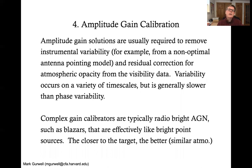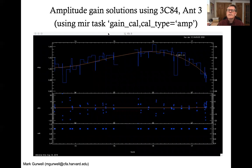Amplitude gain calibration is usually required to remove instrumental variability from, say, a non-optimal antenna pointing model and residual correction for atmospheric opacity from the visibility data. Variability occurs also on a variety of timescales. However, it is generally slower than phase variability, but not always. Sometimes they are related. If the atmosphere is very unstable, your phase will actually begin to affect the amplitudes as well because we integrate over a certain fraction of time. And if the phase instability is shorter than that integral time, you will decorrelate the signal during an actual scan, resulting in a drop in amplitude. Complex gain calibrators, again, are typically bright AGN. They are effectively point sources and the closer to the target they are, again because of the similar atmosphere.